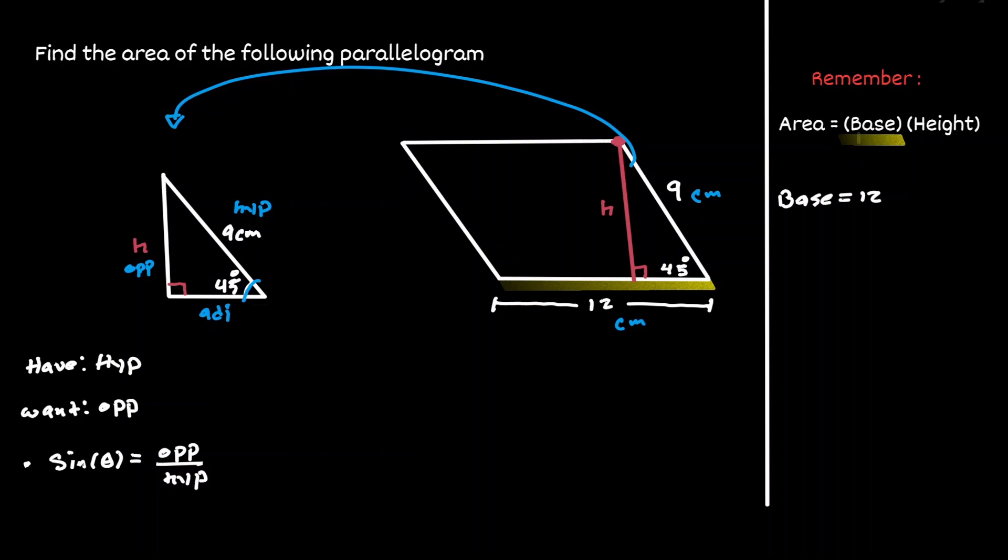Now let's plug in all this information. The sine of 45 degrees is equal to the opposite, which is the height, over the hypotenuse, which is 9.